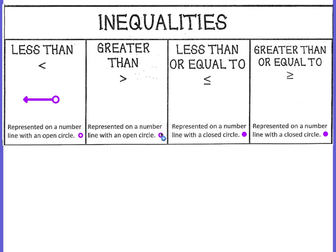If it's greater than, then we still have an open circle, but this time our line goes to the right because it's getting larger. The circle is placed at the value that you're talking about. If you're saying that x is greater than 3, then the circle is placed at the 3 on the number line. If you're saying x is less than 5, then the circle is placed on 5 on the number line.